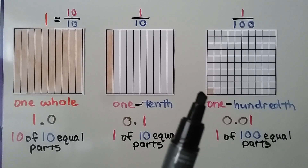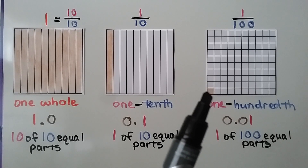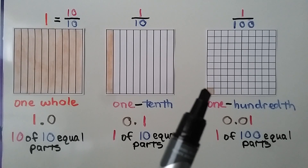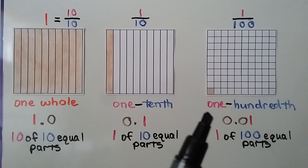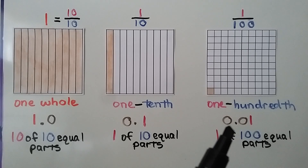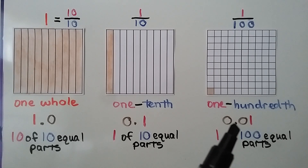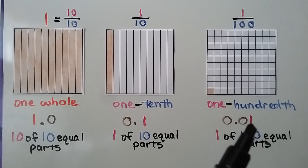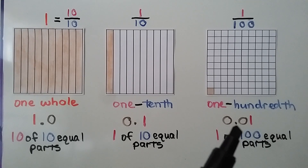This model is divided into one hundred equal-sized parts, and only one of the parts is shaded — that's one one-hundredth. We can write it as one-hundredth, or as zero point zero one: a zero for zero ones, a decimal point, a zero in the tenths place because we don't have any tenths, and a one in the hundredths place value.